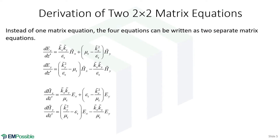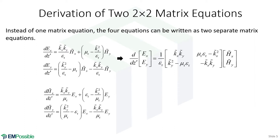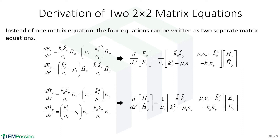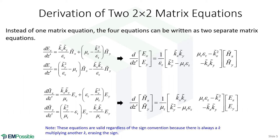Here are our four coupled differential equations. Now instead of lumping these into a single four by four matrix equation, we're going to put these into two two by two matrix equations. We'll take the top two equations and put them into matrix form, and do the same for the second two equations. Notice these are two by two matrices, and when we combine these to get a single matrix equation, it will be a two by two matrix equation — thus the name. Also notice that in these matrices, we always have k's multiplying another k — either k squared or k multiplying k. So these two equations are the same regardless of sign convention.